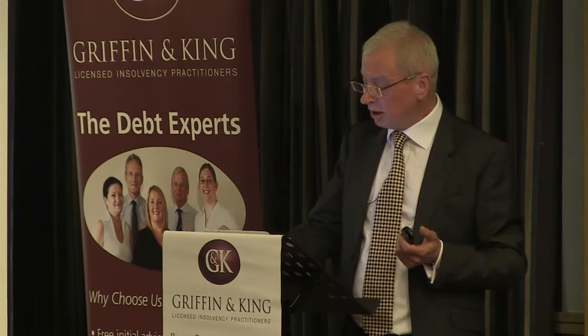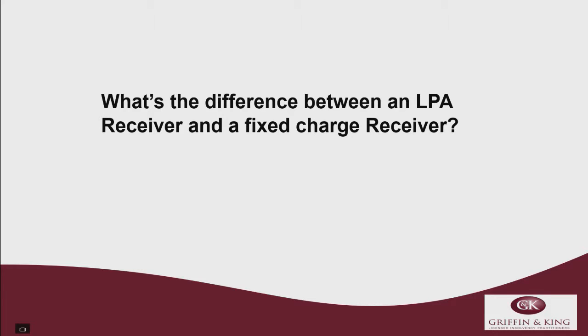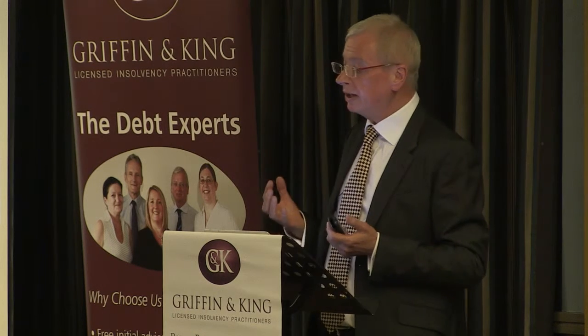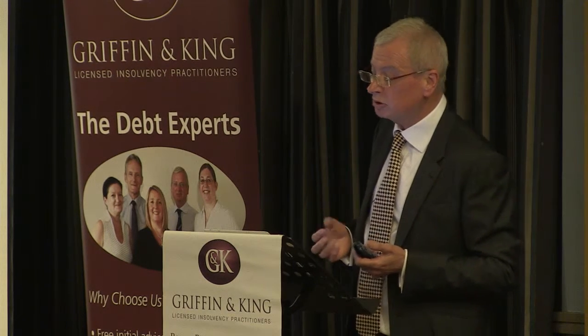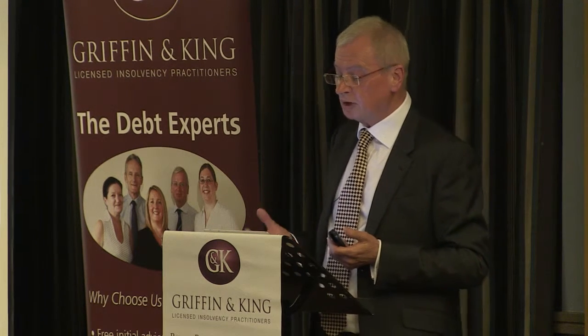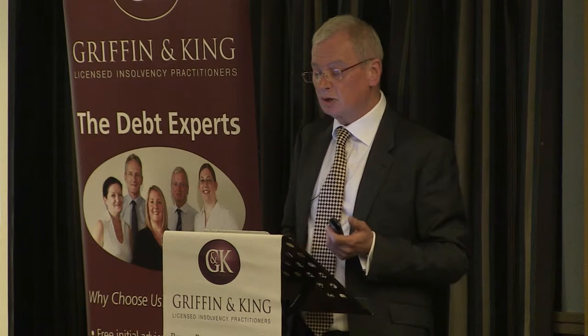What's the difference between an LPA Receiver and a fixed charge Receiver? An LPA Receiver is appointed under the Law of Property Act 1925. The lender — typically the bank — becomes eligible to appoint when they can exercise the power of sale, such as on a mortgage default. Under the LPA 1925, an LPA Receiver has the power to demand and recover all income — that's typically the rent — but not a sale. So the powers within the Act are relatively limited.